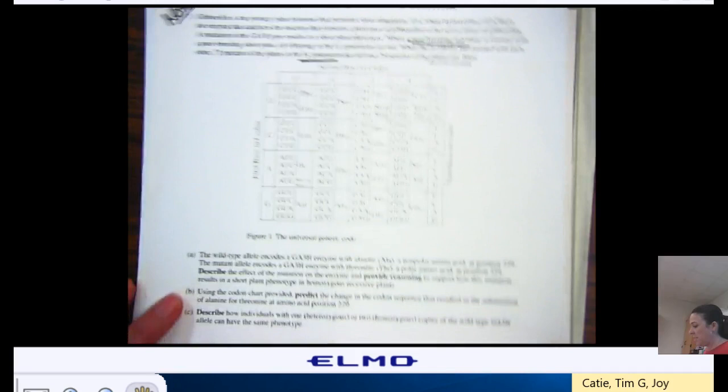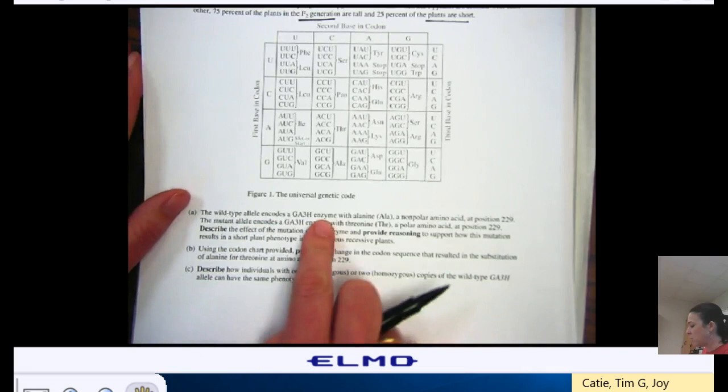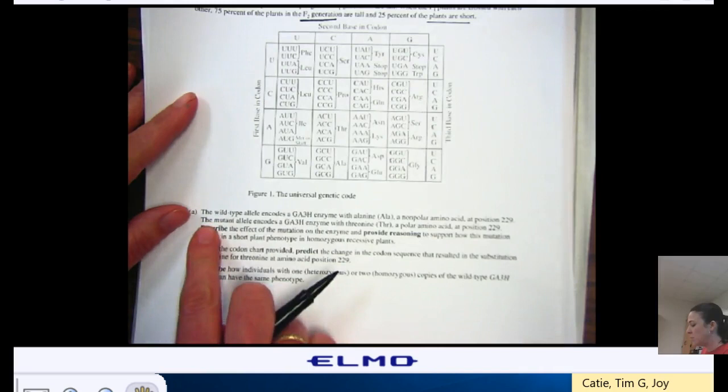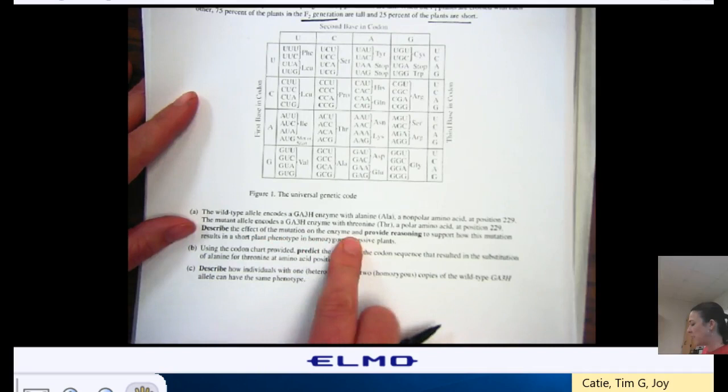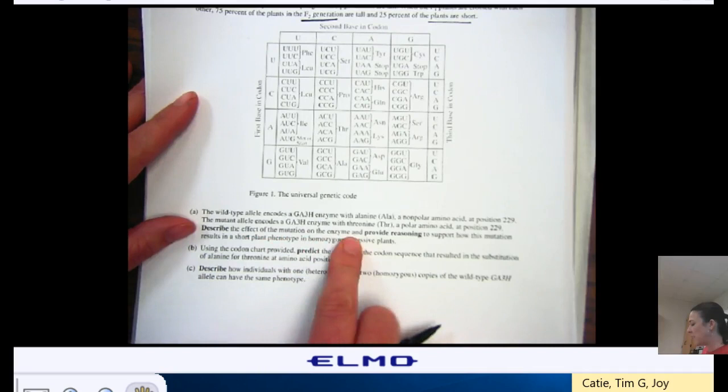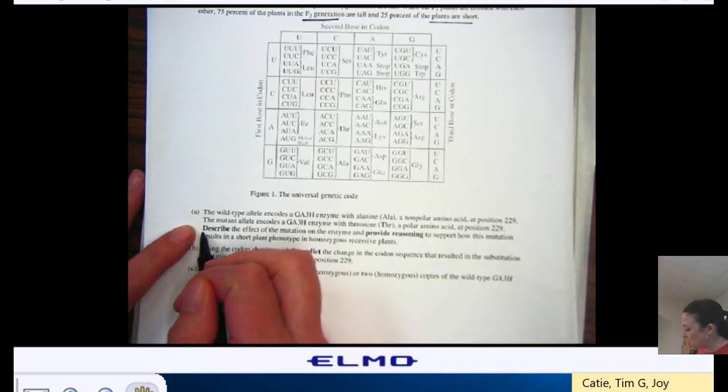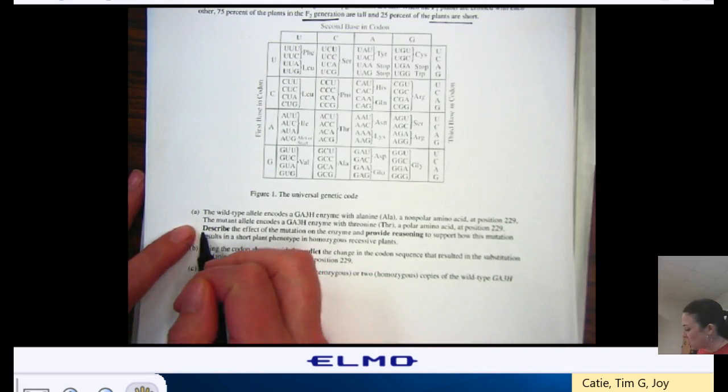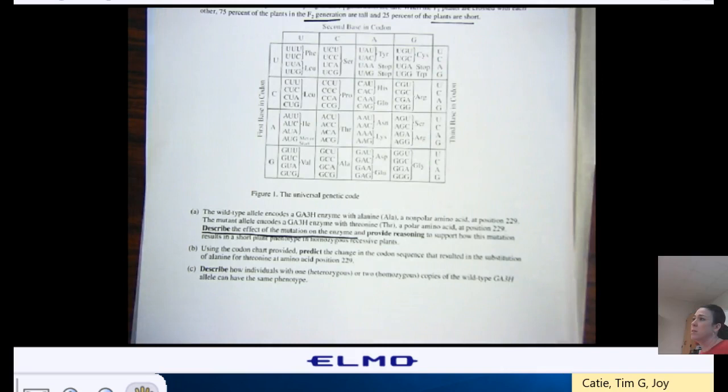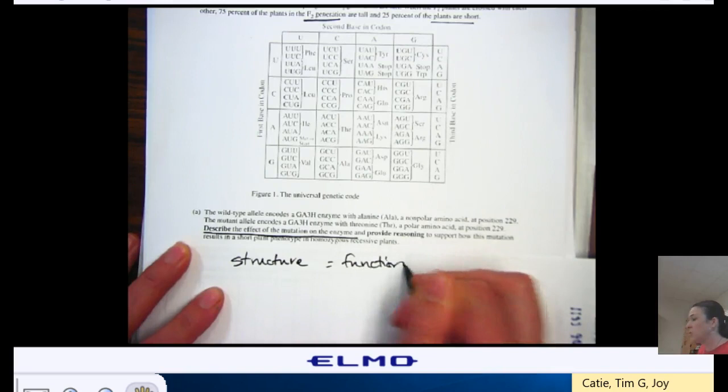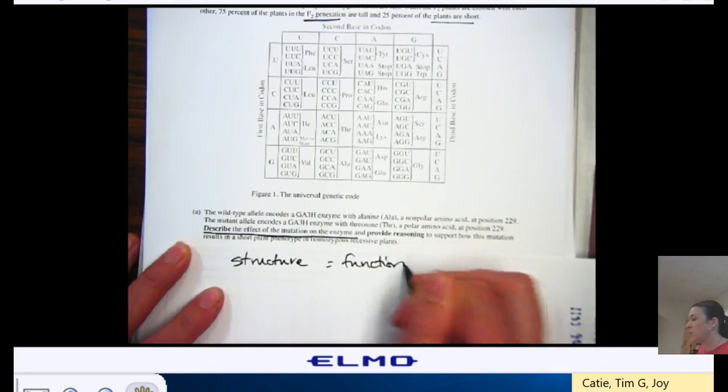So, I know that this is showing complete dominance. And then, here I can come down to A. So, my wild type allele encodes an enzyme with alanine, which is nonpolar, at position 229. The mutant allele encodes the enzyme with a different amino acid, so its primary structure is different, at the same position. So, describe the effects of mutation on the enzyme, and provide a reason to show how this mutation results in a shorter plant phenotype in the homozygous recessive. We're going to look back at the same theme, again, of structure is related to function.